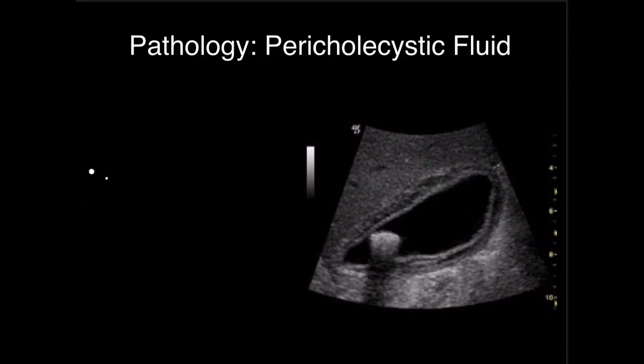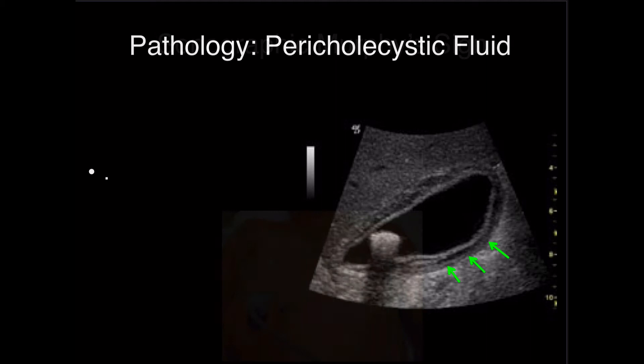Here we see some hyperemia and fluid around the wall of the gallbladder. This is called pericholecystic fluid, and it is definitely a concerning finding for an inflamed or infected state — specifically concerning for cholecystitis. You can see it right there.